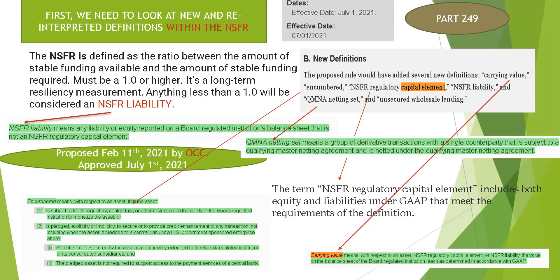The NSFR is defined as the ratio between the amount of stable funding available and the amount of stable funding required, and must be 1.0 or higher. It's a long-term resiliency measurement. Anything less than 1.0 will be considered an NSFR liability.